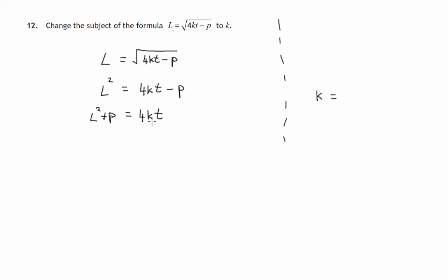The K is still tucked in there and we've got 4 times K times T. In other words, the K is being multiplied by 4T. So the opposite of multiplying by 4T is dividing by 4T. So we should be taking the left hand side and dividing all of it by 4T, and we'll do the same with the right hand side. When we divide that by 4T, the 4 and the T will disappear and we'll get K on its own.